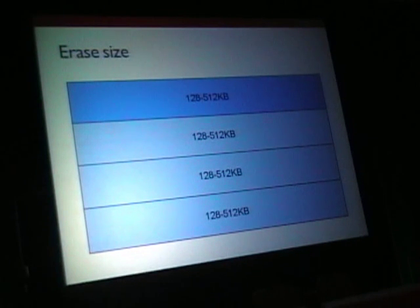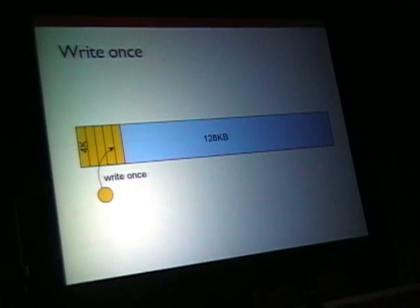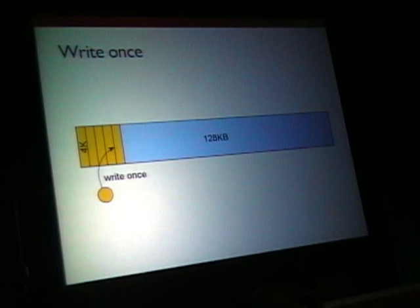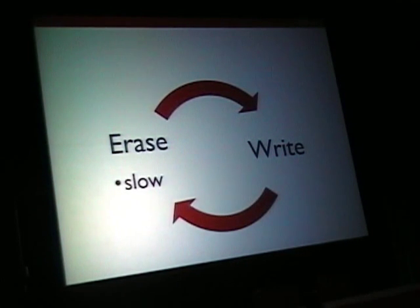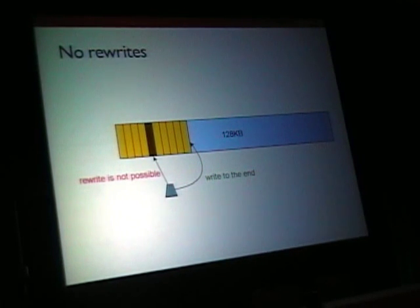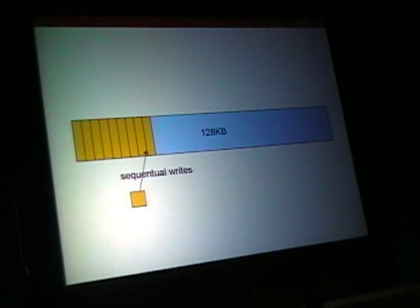Internally, to erase data you operate on up to half-megabyte data ranges. In Flash, you only write once — usually in four kilobyte blocks. When you write one time, you cannot rewrite your data directly; you need to erase it first. So it's a process: write, then erase. And erase is slow. There are no rewrites — when you write to the same area, it actually goes to the end of the list. It's a kind of sequential, sequential appending data to the end.